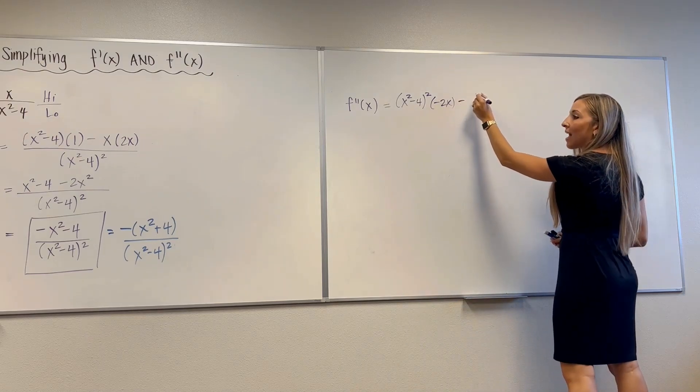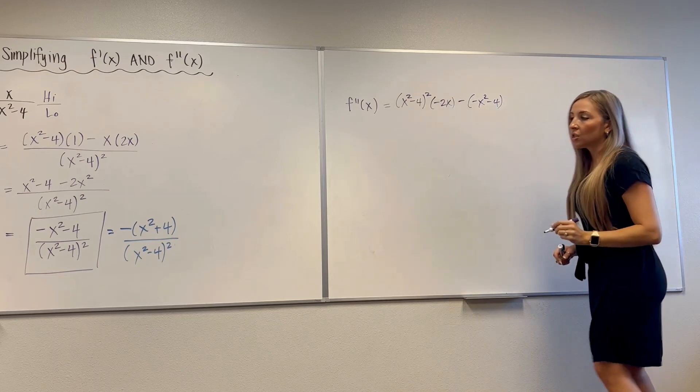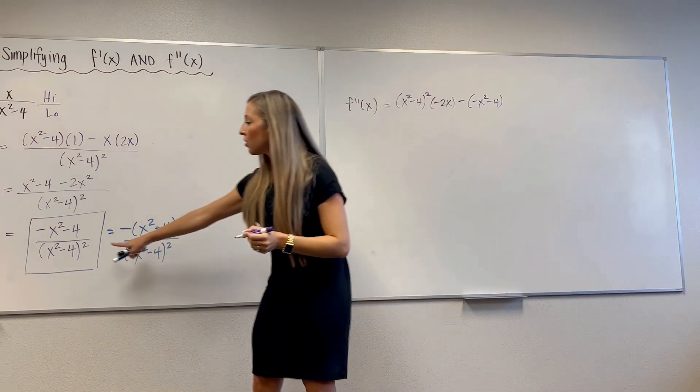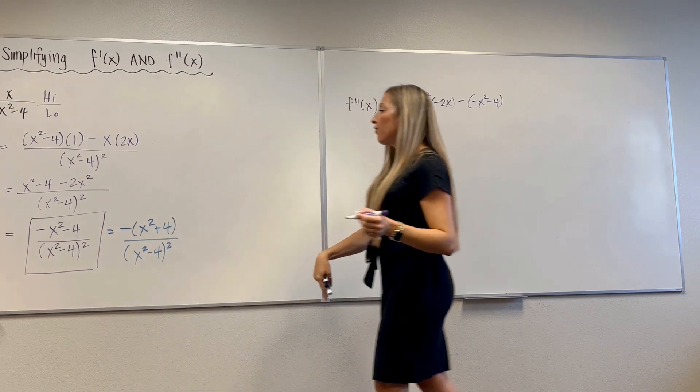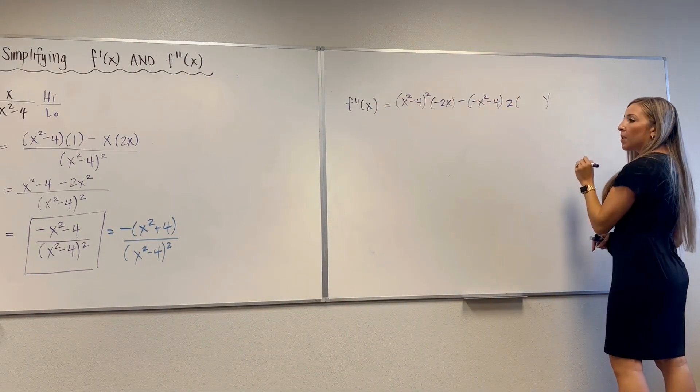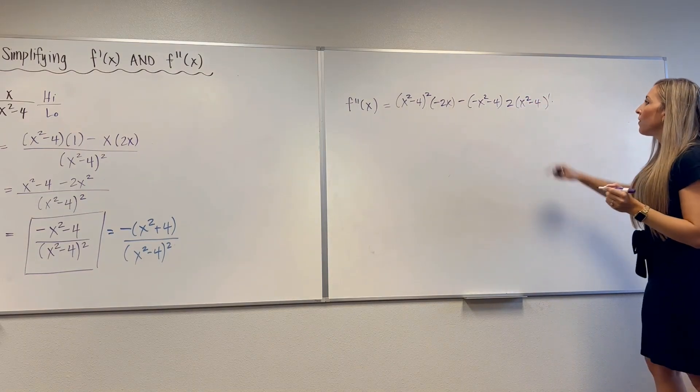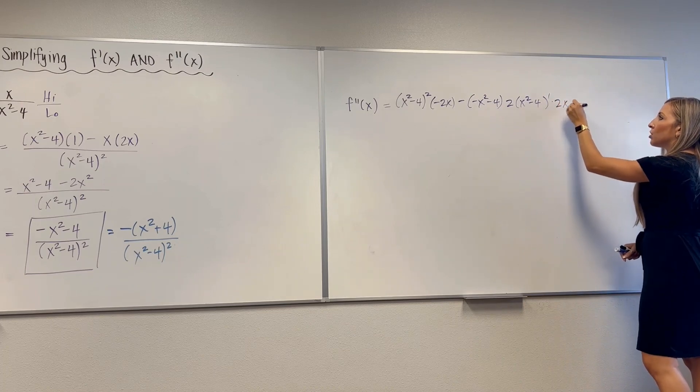So here we go. Low d high. So low, x squared minus 4 squared. D high, derivative of the numerator. Derivative of negative x squared is negative 2x. Derivative of negative 4 is 0. Low d high. Minus high. Negative x squared minus 4. D low. I need to use the chain rule to differentiate the denominator. So take the 2. Bring it in front. So we'll have 2. New exponent is 1.